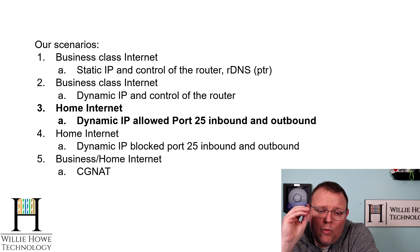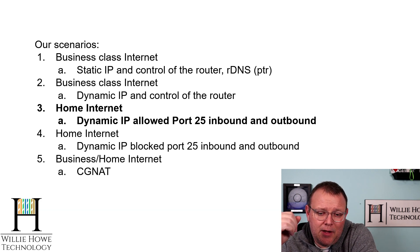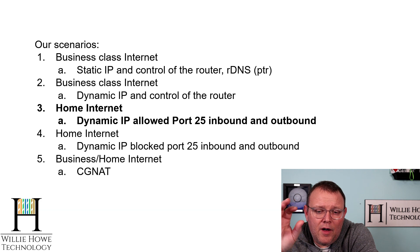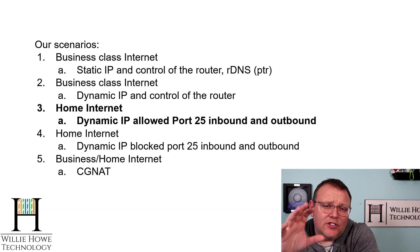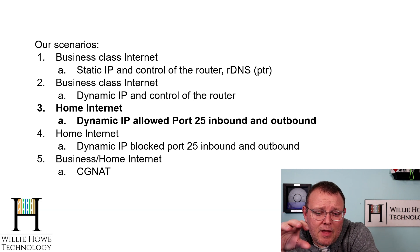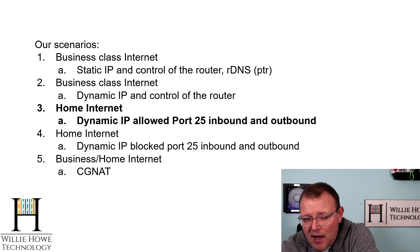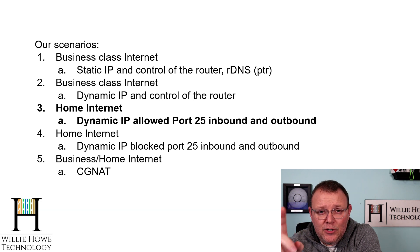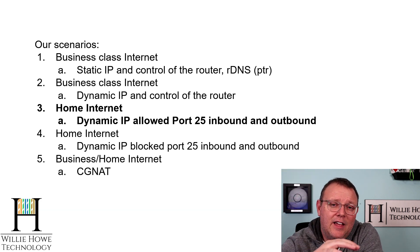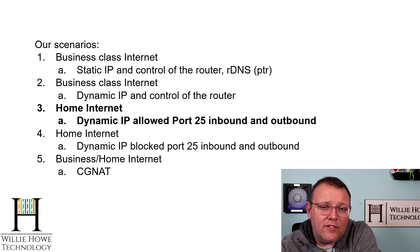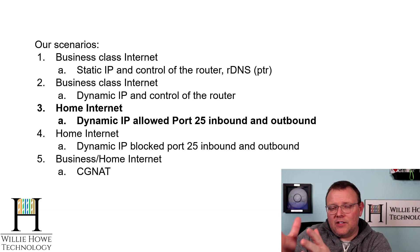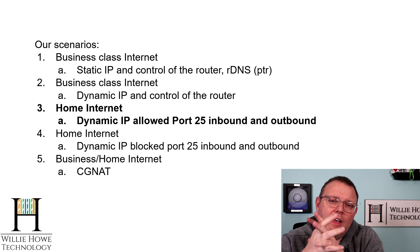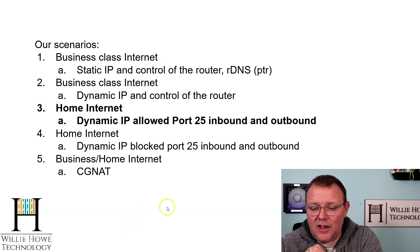Scenario number three is the one we're going to deal with first, because it's the easiest for me to replicate here — home internet dynamic IP with allowed port 25 inbound and outbound. Then we'll do scenarios four and five, and then one and two, which are really the easiest. You'll see where scenario two has some overlap with three, four, and possibly five. If there are any other scenarios you can think of that we should cover, put those in the comments so I can keep this list going.